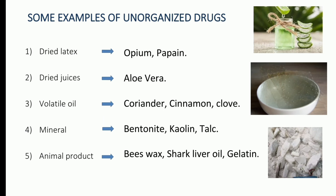Some examples of unorganized drugs: dried latex includes opium and papain; dried juices include aloe vera; volatile oils include coriander, cinnamon, and clove; minerals include bentonite, kaolin, and talc; and animal products include bee wax, shark liver oil, and gelatin.